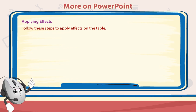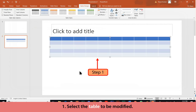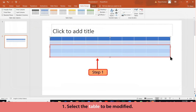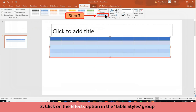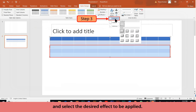Applying Effects: Follow these steps to apply effects on the table. Select the table to be modified, then click on the Design tab. Click on the Effects option in the Table Styles group and select the desired effect to be applied.